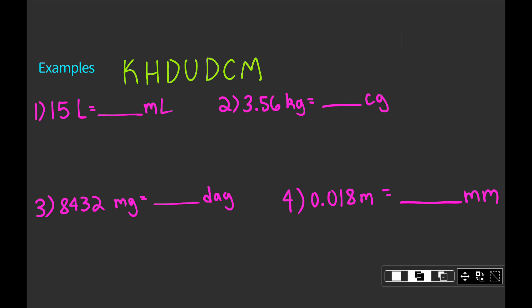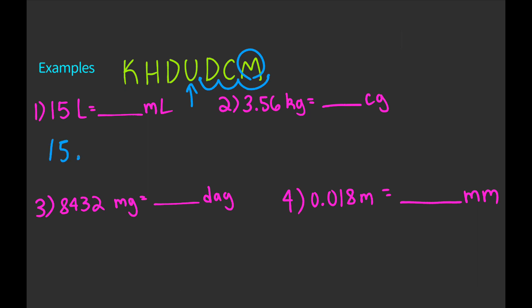Starting with example one, we want to convert 15 liters into milliliters. We find where we're starting — since we're starting with liters, we're at the unit. And since we're converting to milliliters, our target is milli. We take our decimal point and move it to the target: one, two, three — three decimal places to the right. Applying that to 15, we move the decimal three spaces to the right and get 15,000. So 15 liters equals 15,000 milliliters. Since milliliters is further right than liters, milliliters is smaller, and converting from a larger unit to a smaller unit means our number gets greater — which checks out.